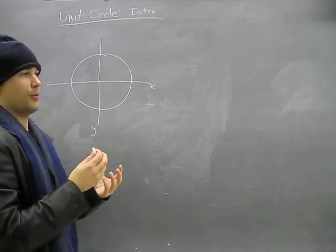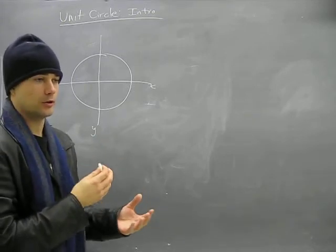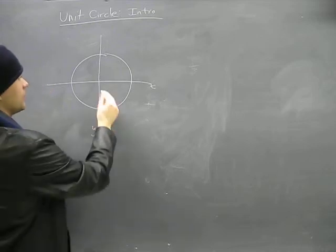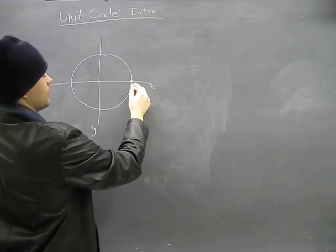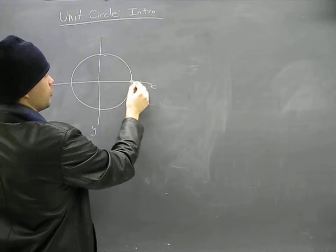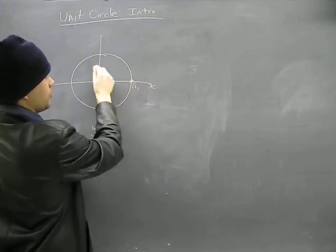Like miles per hour - how many miles per one hour, right? So the coordinates of this point here would be, well, this distance here would be one, so the x value would be one, and the y value would be zero.